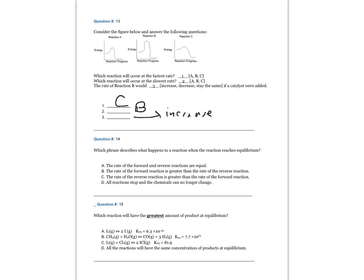Question number 14. Which phrase describes what happens to a reaction when the reaction reaches equilibrium? The answer is A: the rate of the forward and reverse reactions are equal.